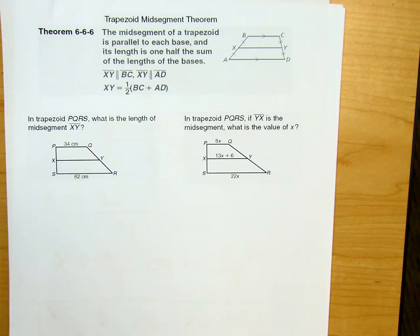All right, today we'll be learning the trapezoid midsegment theorem. The theorem states that the midsegment of a trapezoid is parallel to each base and its length is one-half the sum of the lengths of the bases.